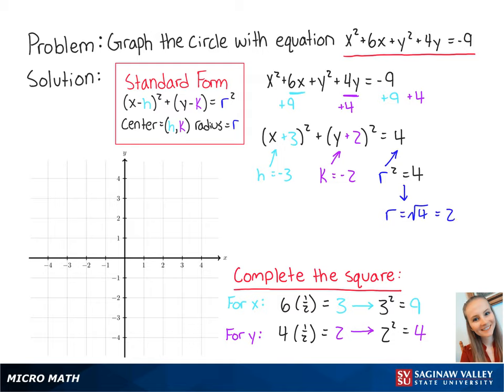Now we know that our center is at negative 3, negative 2 and that the radius is equal to 2. Now we can graph the points of our circle.